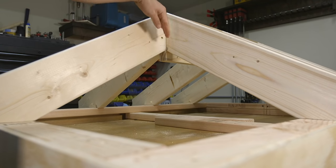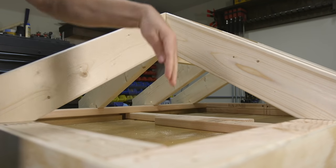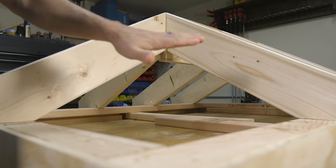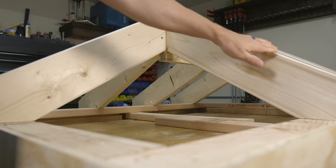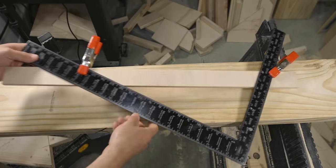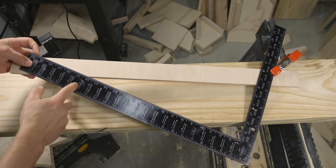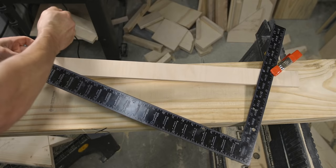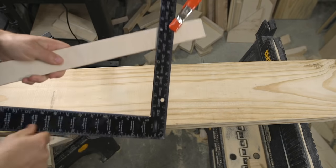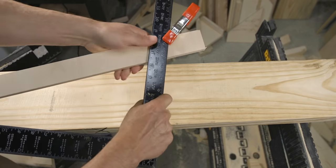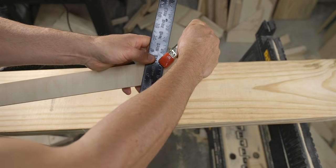Because hip rafters are at a 45 degree angle to the ridge board, they rise slower or more gradually than the common rafter would. Therefore, we need to account for this by changing the run of our square from 12 inches to 17 inches. Just make sure that when you make that adjustment to double check that the tongue measurement of 6 inches is still right on.